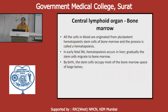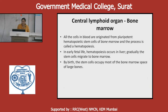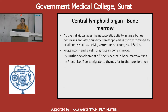Now we will see the role of each one. The first central lymphoid organ is bone marrow. All cells in blood originate from the pluripotent hematopoietic stem cells of the bone marrow — that is called hematopoiesis. In early fetal life, hematopoiesis occurs in the liver. Gradually stem cells migrate to bone marrow, and by birth the stem cells occupy most of the bone marrow space of large bones. As the individual ages, hematopoietic activity in large bones decreases, and after puberty hematopoiesis is mostly confined to axial bones such as pelvis, vertebra, sternum, skull, and ribs.